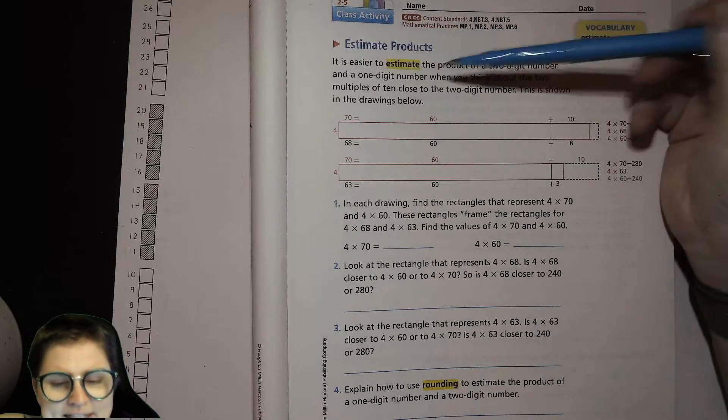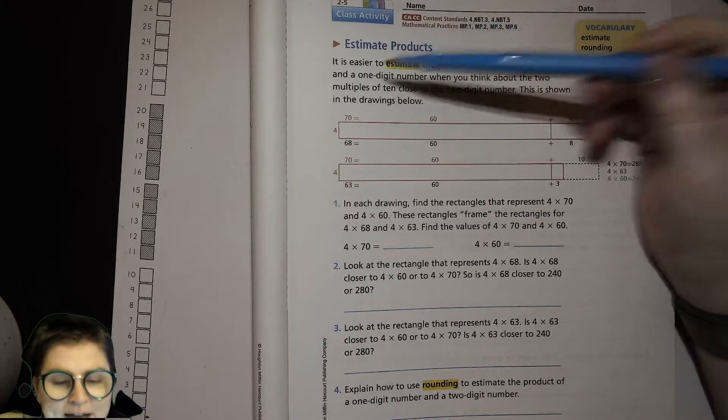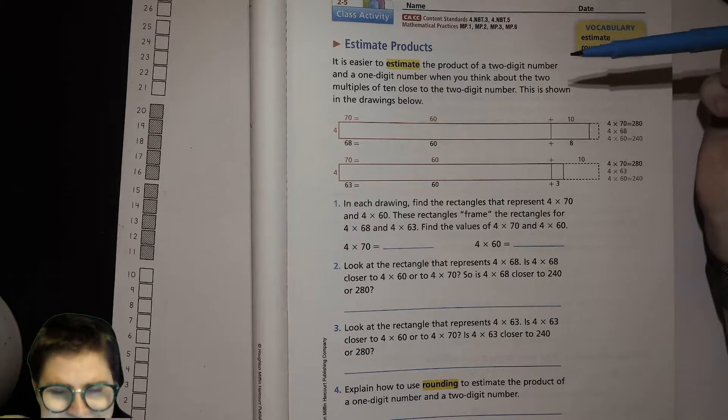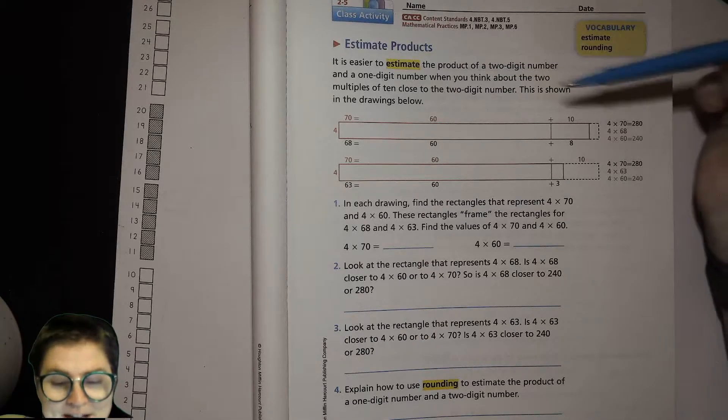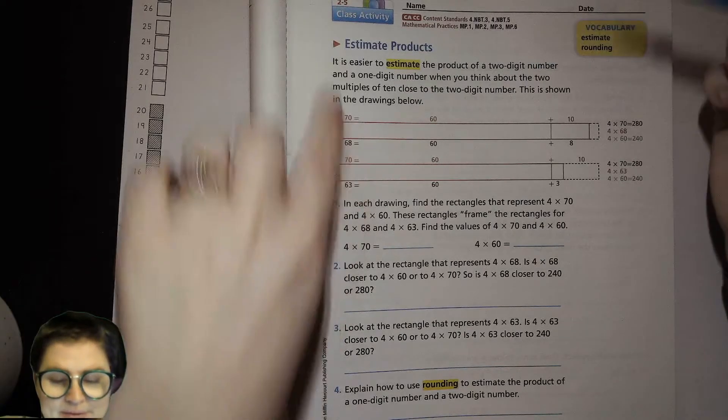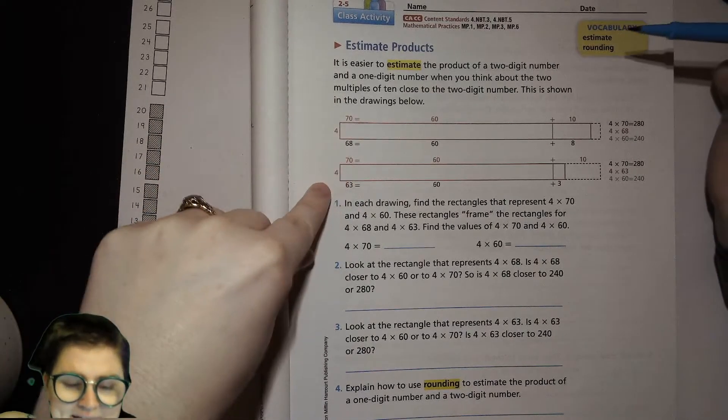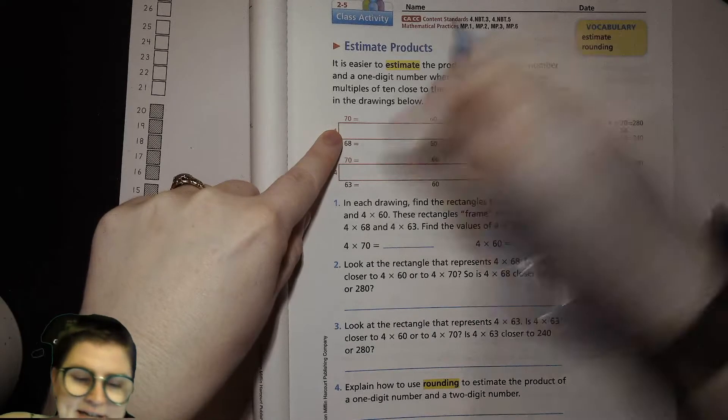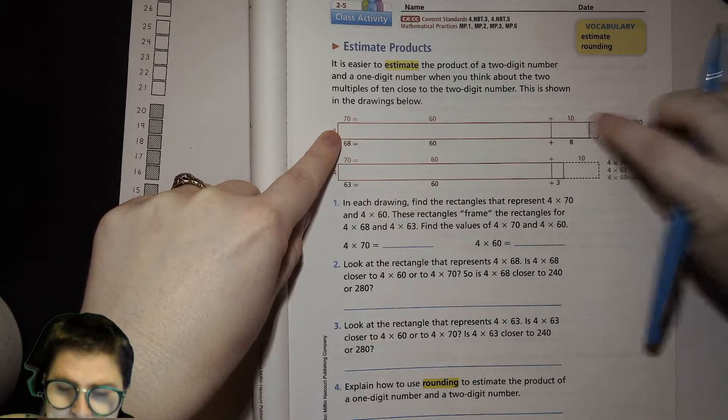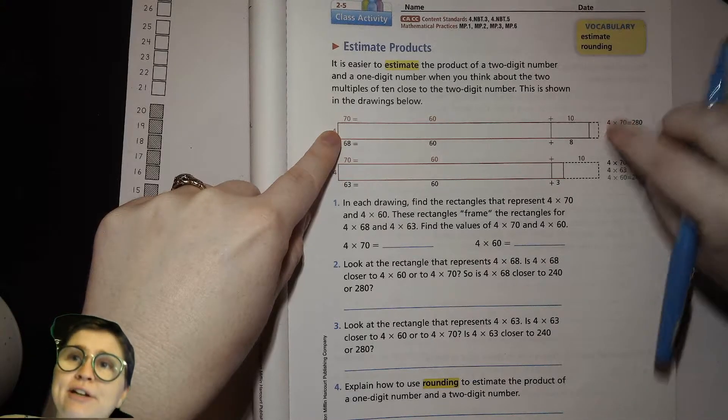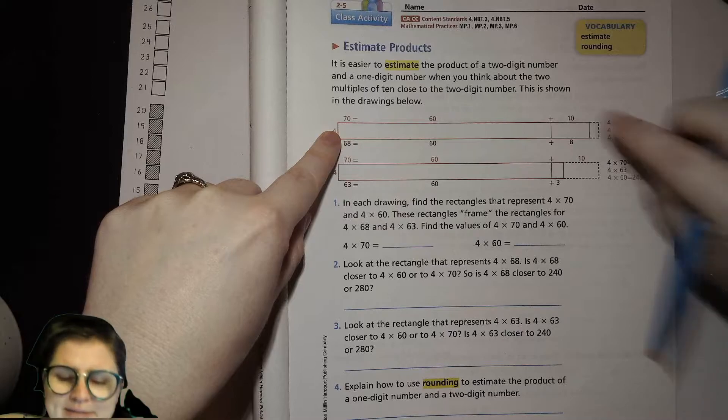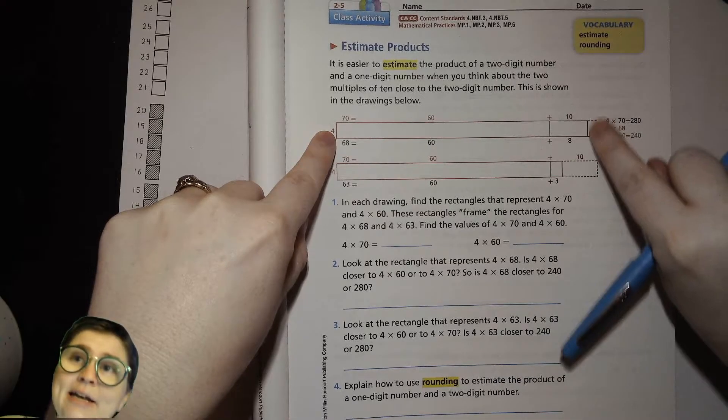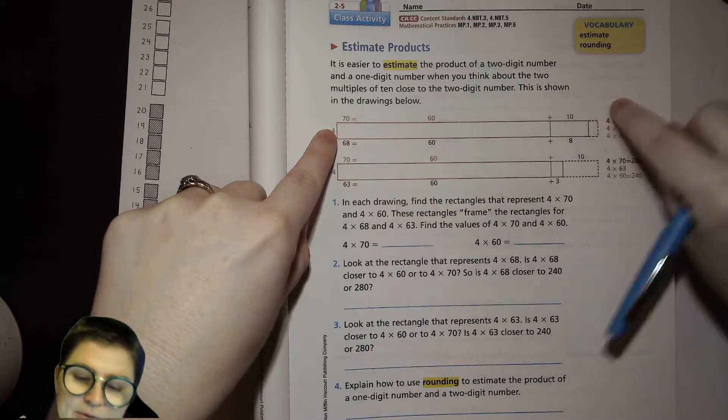Okay, so let's read what it says here. It is easier to estimate the product of a two-digit number and a one-digit number when you think about the two multiples of 10 close to the two-digit number. This is shown in the drawings below. So here we're dealing with 4 times 68, and so you can think okay, what about 4 times 70, which is pretty close to 68, and that would come out to this black dashed bar here. And then you can also think, well what's 4 times 60, which is this green bar here, and 4 times 68 would be right in between in this area model.